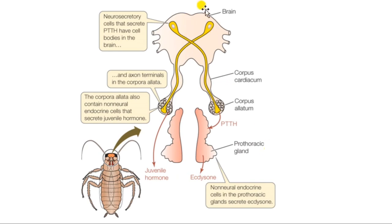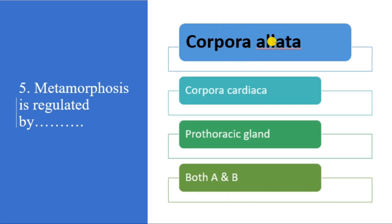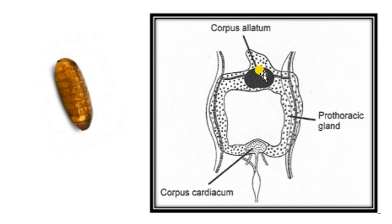So the answer is corpora allata, which regulates metamorphosis. We must also remember precocine, which is an anti-juvenile hormone. When precocine is sprayed over an insect during its immature stage, it will molt into an adult without having maturity, and ultimately the insect will die. The Weismann's ring is where all the endocrine glands — corpora cardiaca, corpora allata, and prothoracic glands — fuse together to produce the puparium-hardening hormone in maggots of dipteran flies.